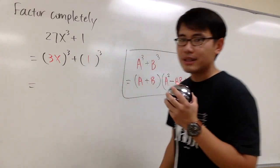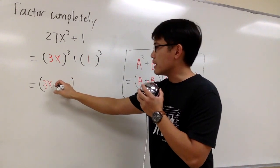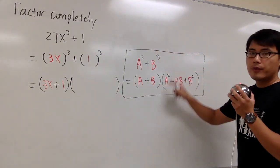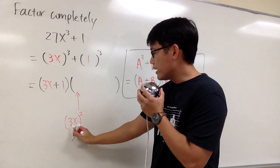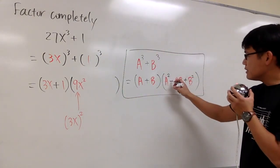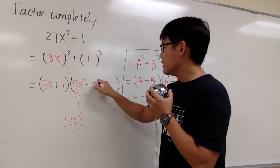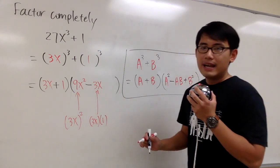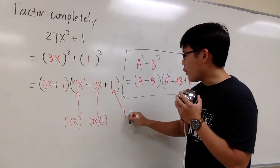We'll go ahead and use this formula to factor this out. The formula says we first have to have a plus b. So a is 3x and b is 1, giving us 3x plus 1 for the first parentheses. For the second parentheses, we are going to have a squared — and since a is 3x, we put down 3x and square it, so 3 to the second power gives us 9, and we have 9x squared. Then minus a times b, which is 3x times 1, giving us minus 3x. Lastly, we add b squared, which is 1 squared, equal to 1.